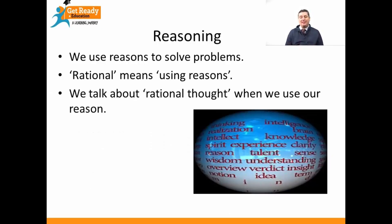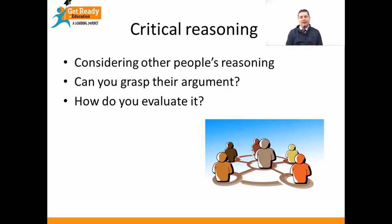We use our reasoning and our brains to solve problems. Being rational means using reasons, and we talk about rational thought when we use our reason to weigh up evidence from other people. Critical reasoning is when you look at other people's reasoning and try to grasp their own argument, and how you evaluate their argument is how you reason about it critically.